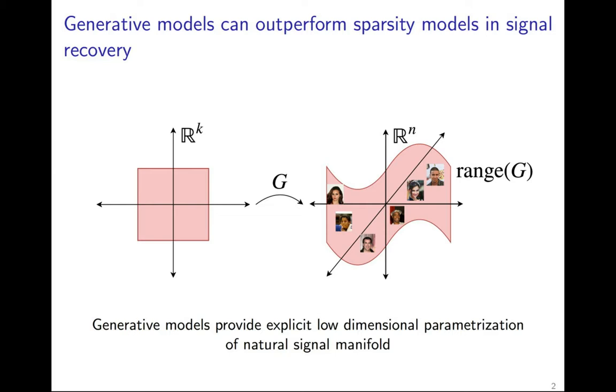The latent code dimension is much smaller than the ambient dimension, forcing them to learn to express these signals in a low-dimensional way. Hence, once trained, generative models are able to provide an explicit low-dimensional parameterization of the natural signal manifold.